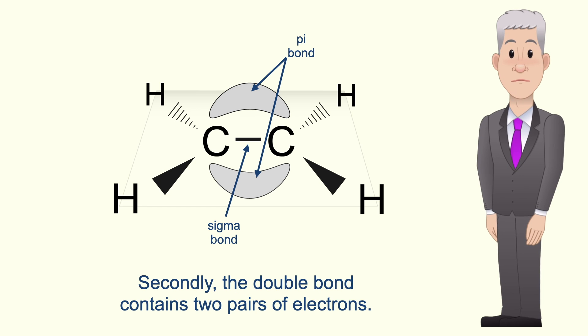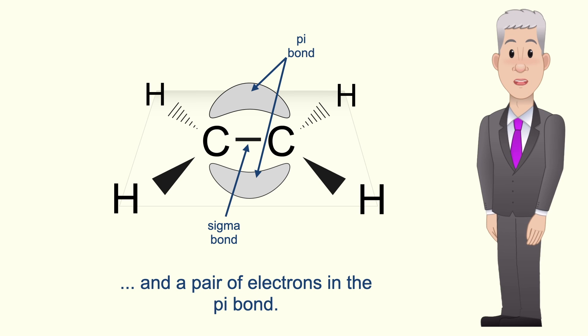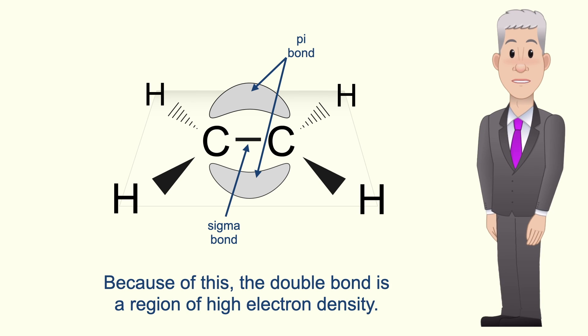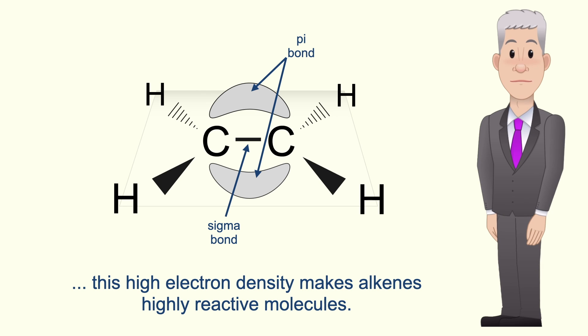Secondly the double bond contains two pairs of electrons. We've got a pair of electrons in the sigma bond and a pair of electrons in the pi bond. Because of this the double bond is a region of high electron density and as we'll see in the next video this high electron density makes alkenes highly reactive molecules.